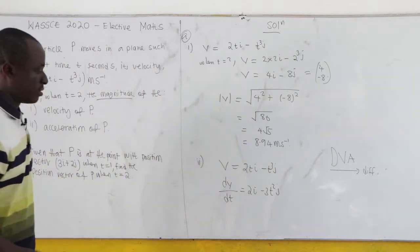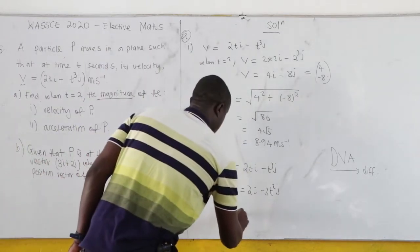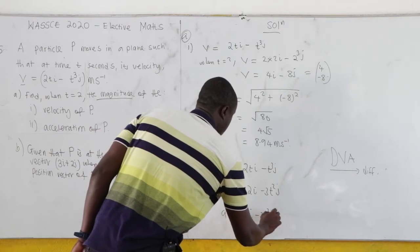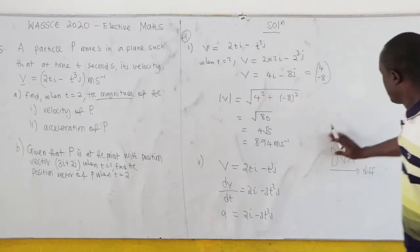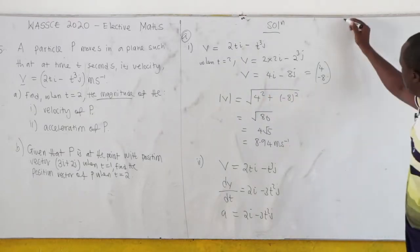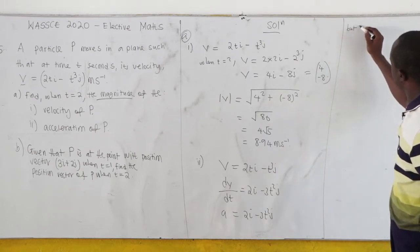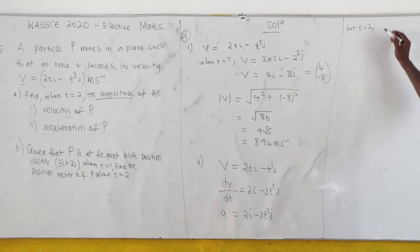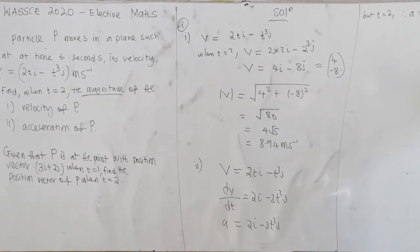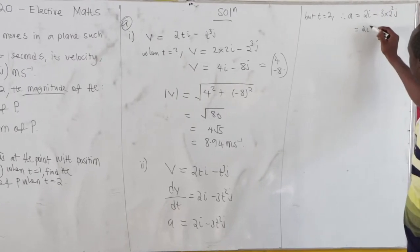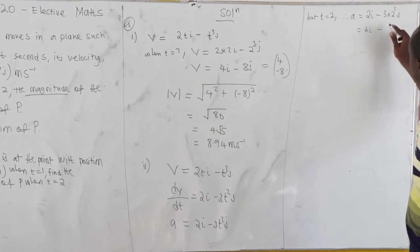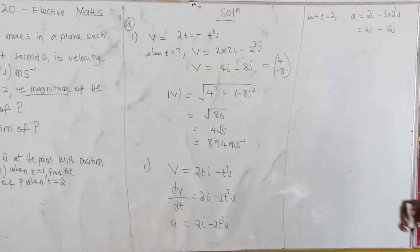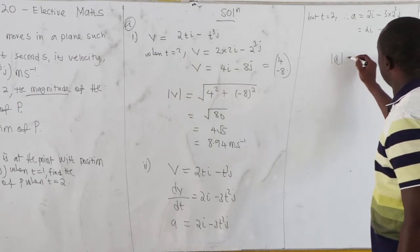So our acceleration is 2i minus 3t²j. We have been given t equals 2, so our acceleration becomes 2i minus 3 times 2 squared j, which is 2i minus 12j.